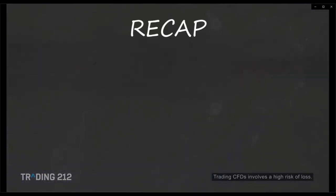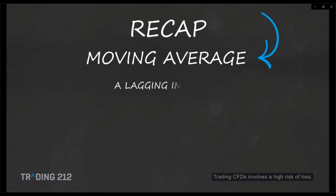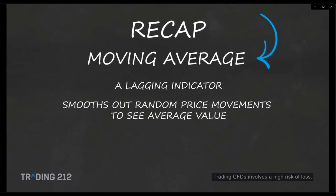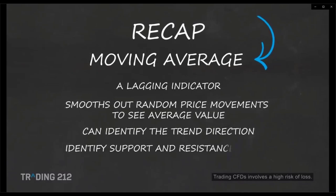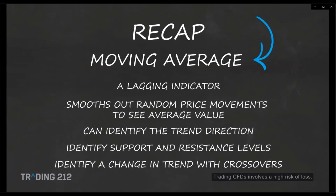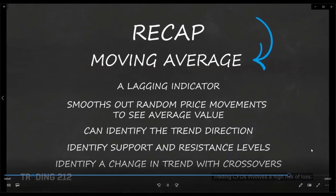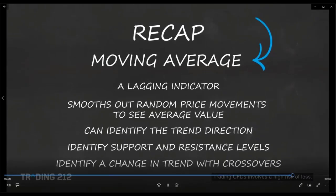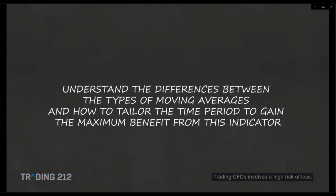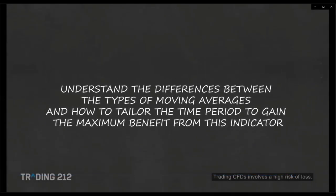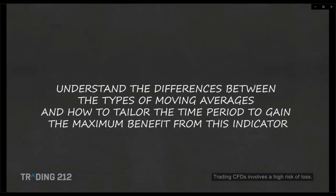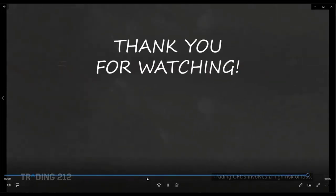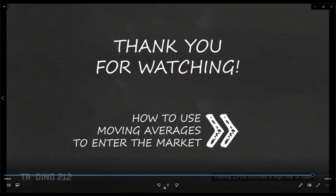To recap: a moving average is a lagging indicator that helps filter out noise from random price movements to see the average value. It can help identify trend direction, determine support and resistance levels, and confirm a trend reversal when looking at moving average crossovers. It's important to understand the differences between types of moving averages and how to tailor the time period to best fit the trend being followed to gain maximum benefit.